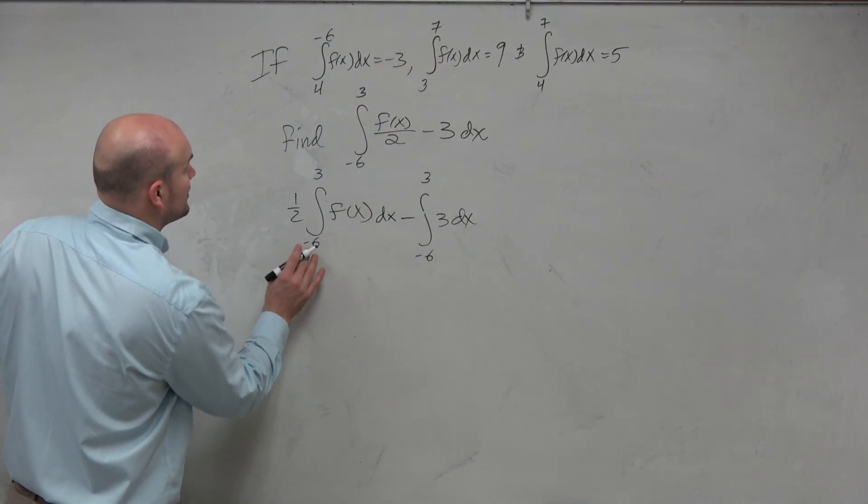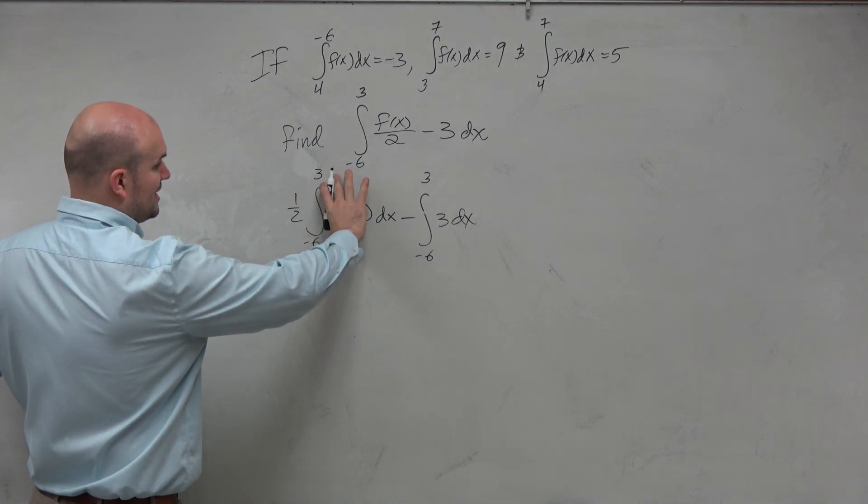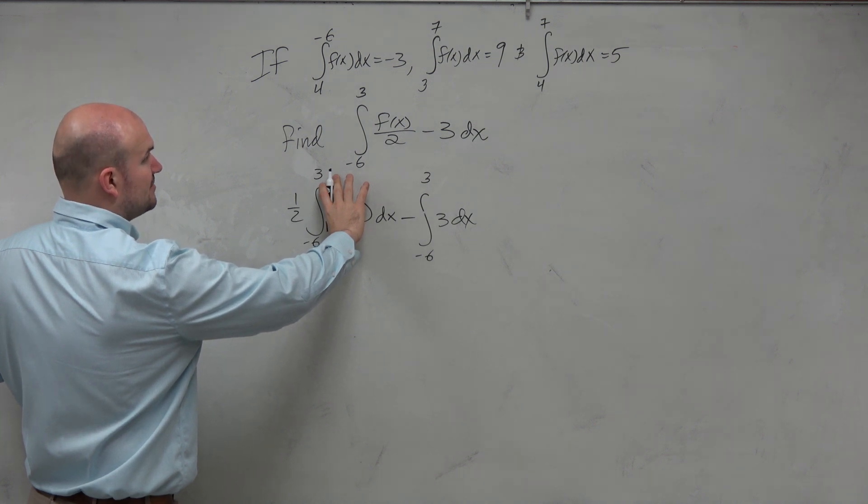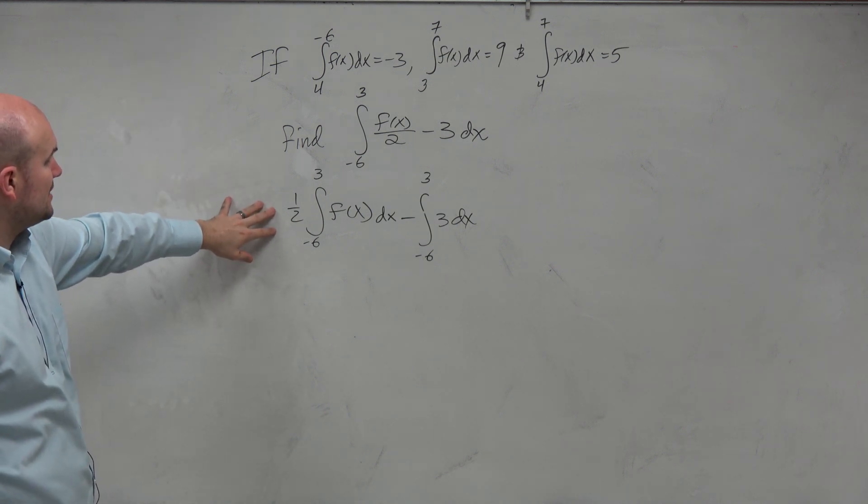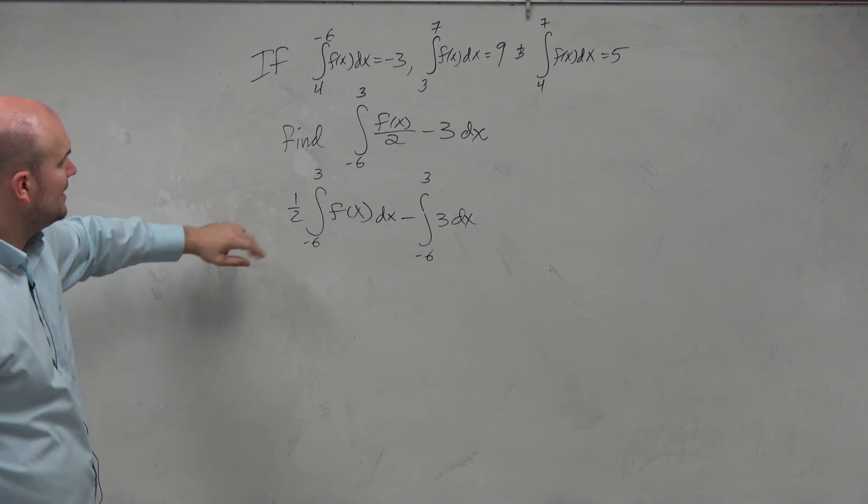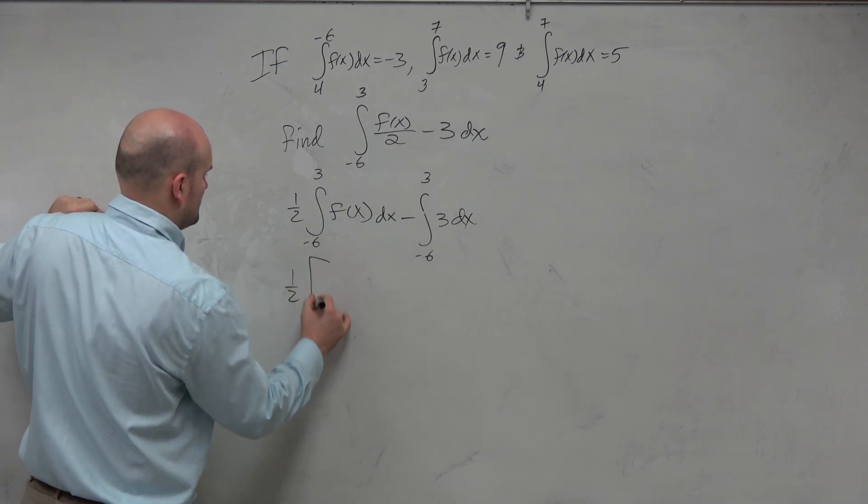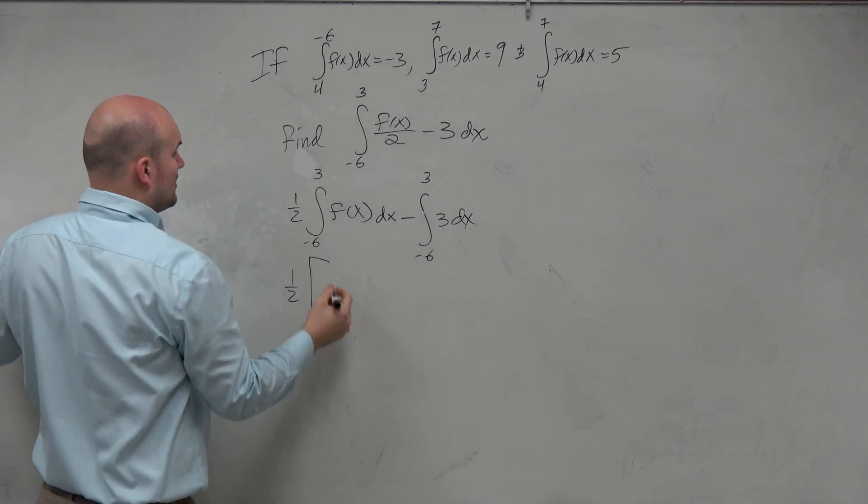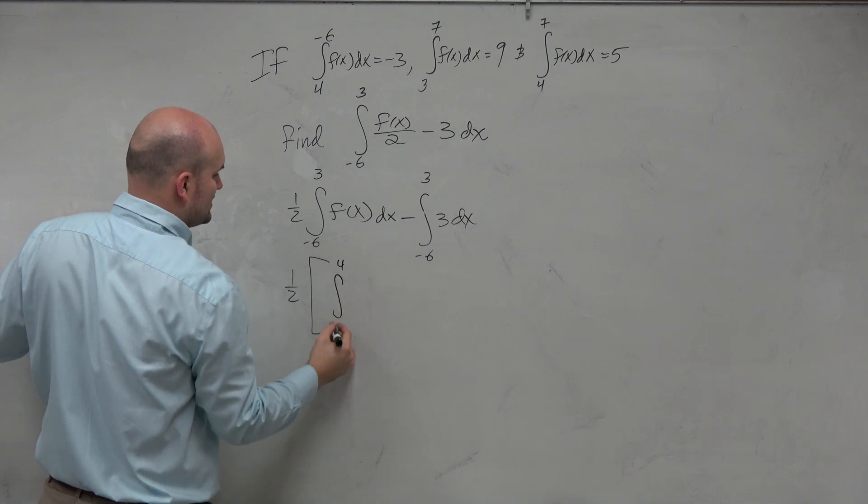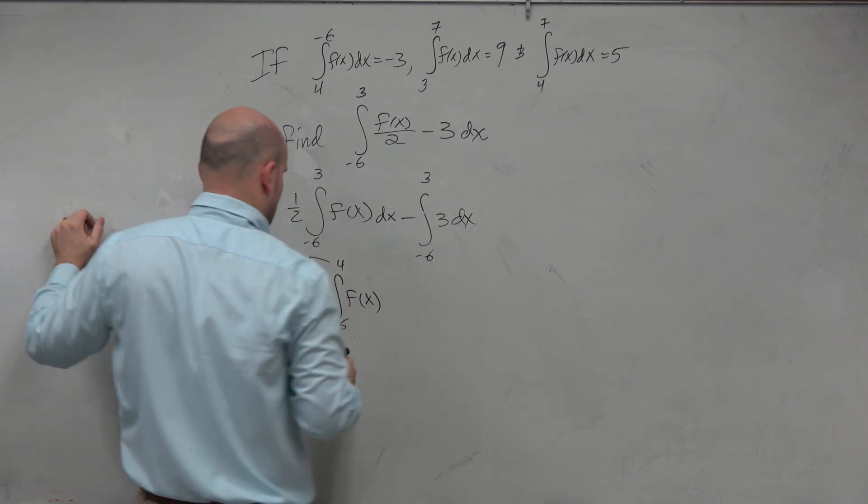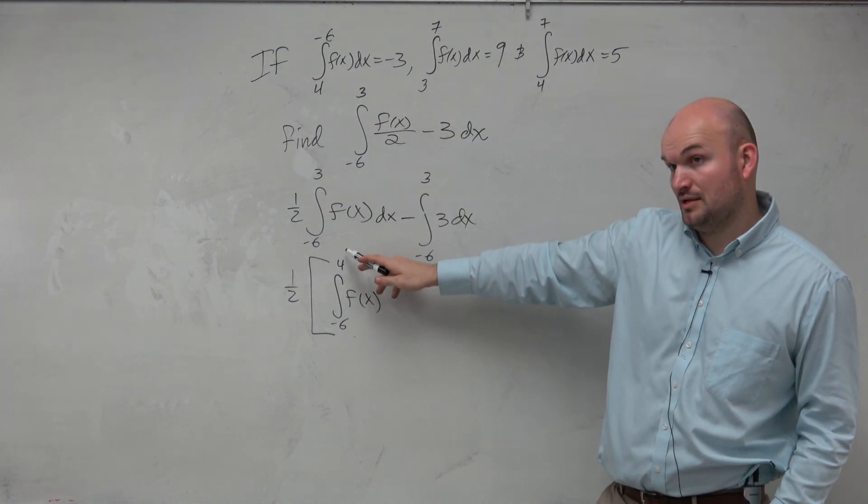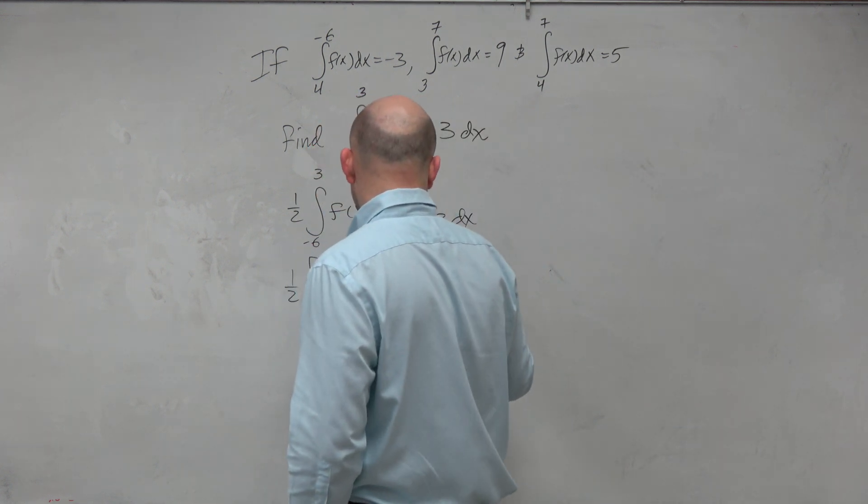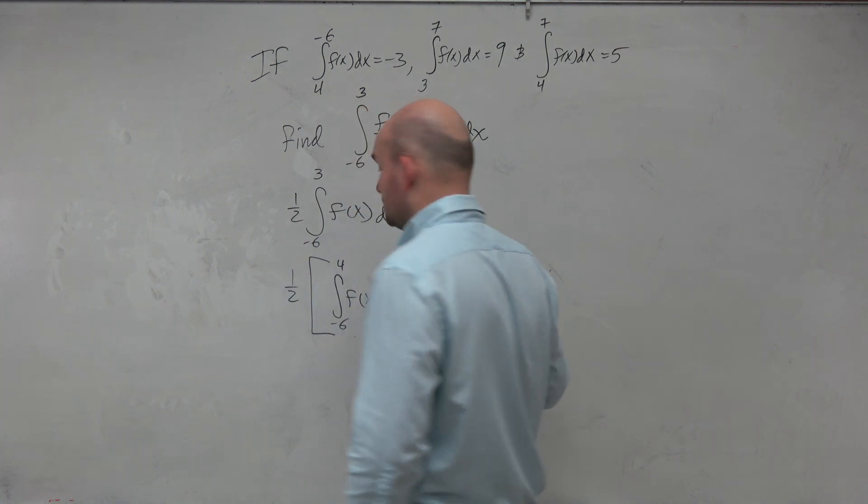If I go from negative 6 to 3, that means the next integral, if I wanted to break this up, I'd have to go from 3 to some other value. Why don't I flip this around? Therefore, I'm left with 4 to negative 6 of f of x. So I'm taking this one and flipping it around, negative 6 to 4.